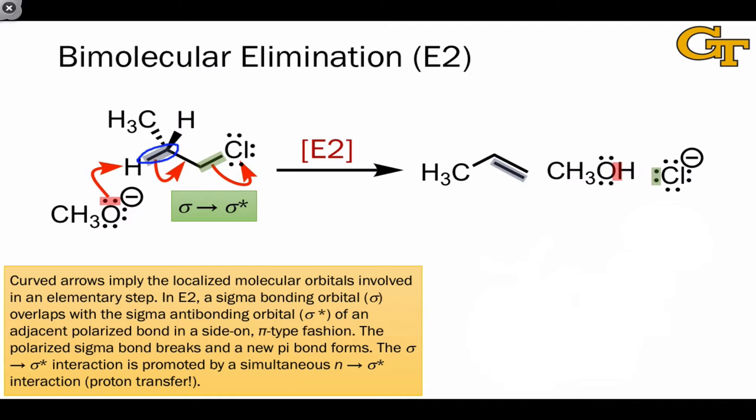This leads to the formation of a new pi bond between the two central carbons and departure of chlorine with a pair of electrons, that is, as a nucleofuge, resulting in the formation of chloride.